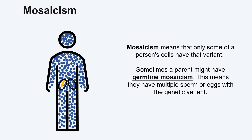Mosaicism can also occur in an individual's sperm or eggs. When a variant is only found in sperm or eggs, this is called germline mosaicism. Current genetic testing technology does not detect germline mosaicism.